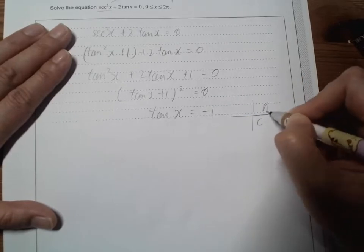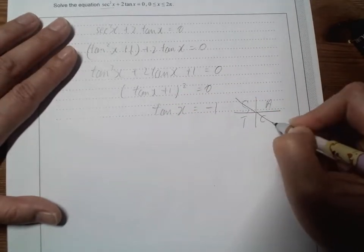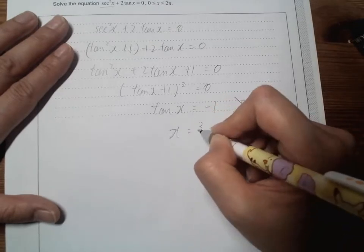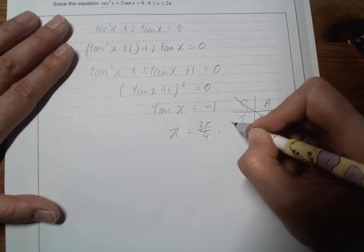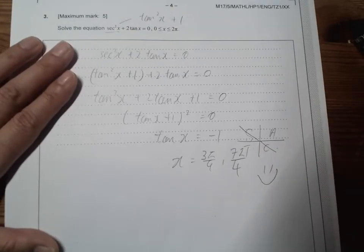CAST negative 1, so we have this one and this one. So x would be equals to 3π/4 and here 7π/4. Nice and easy for another 5 marks.